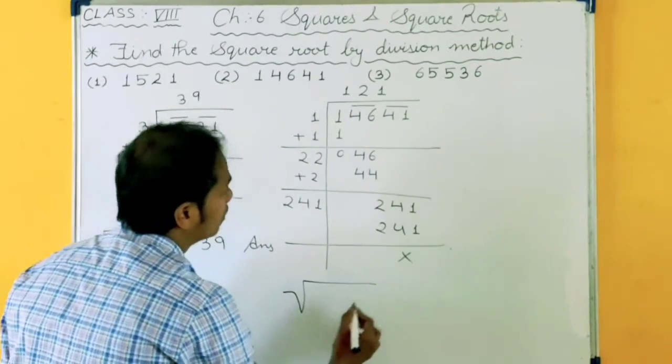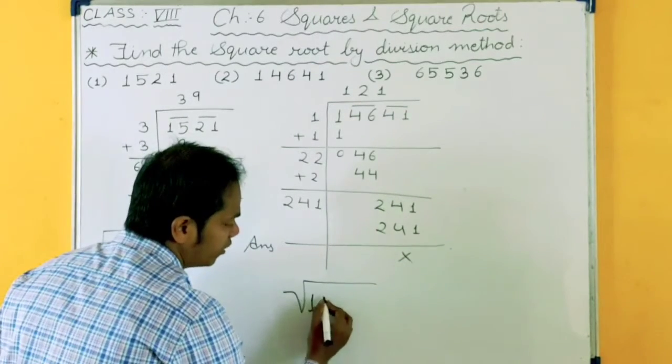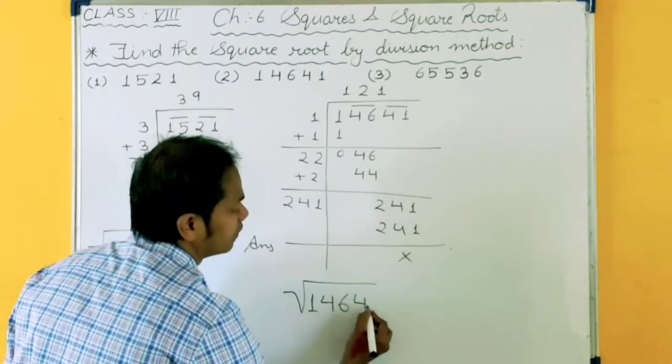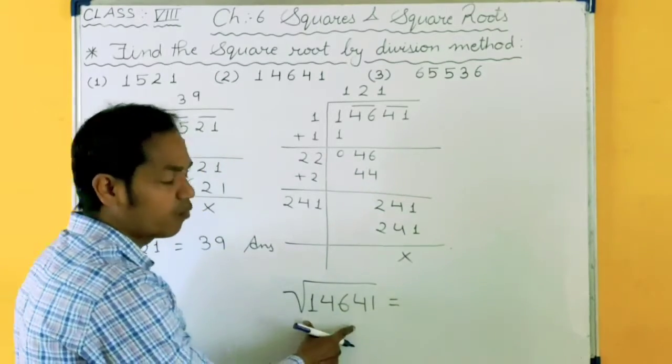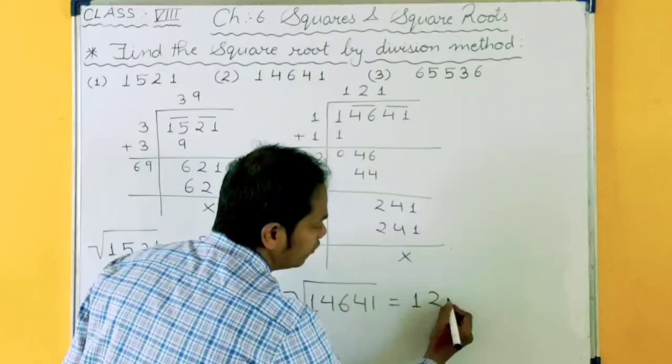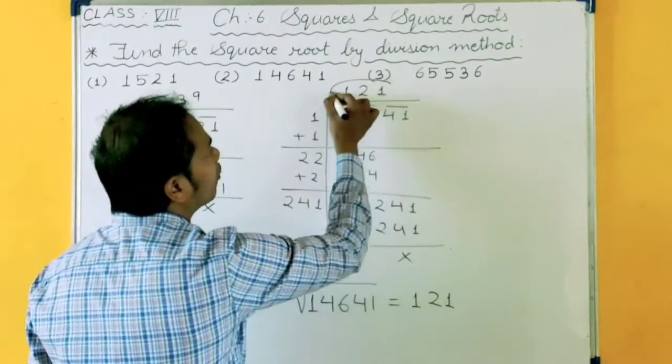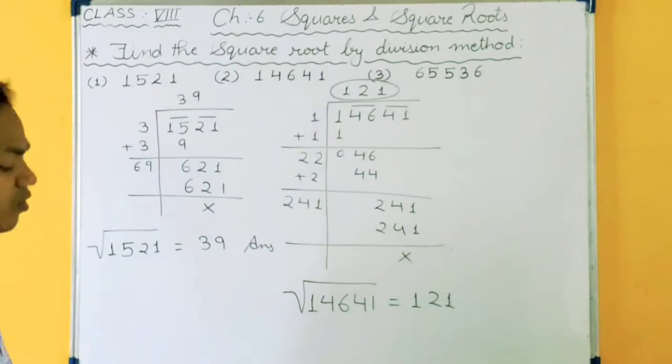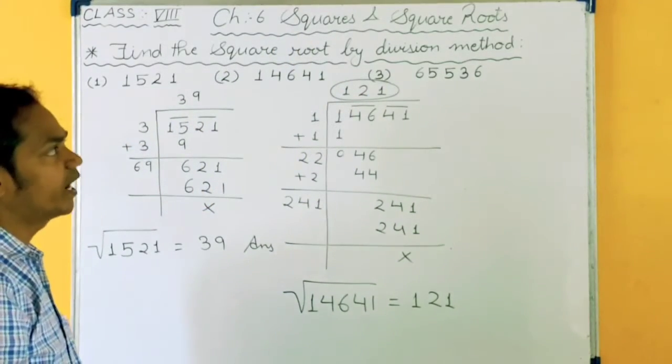So what is the square root of 14641? Square root of 14641 is 121. Here you will get your answer. Understood.